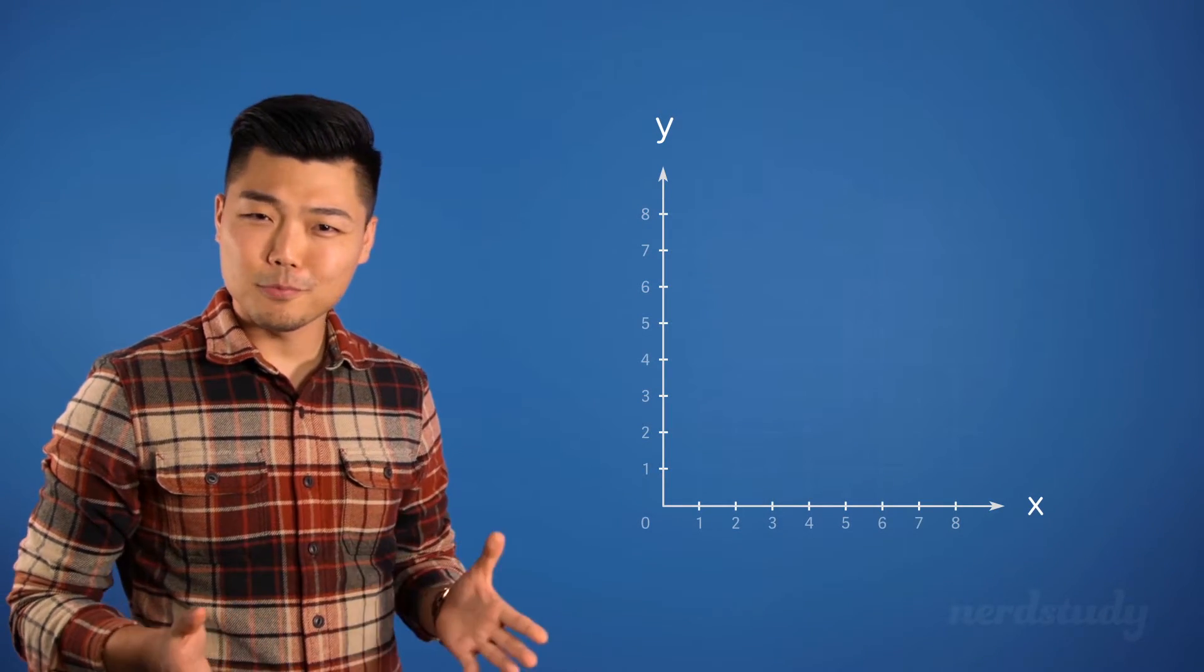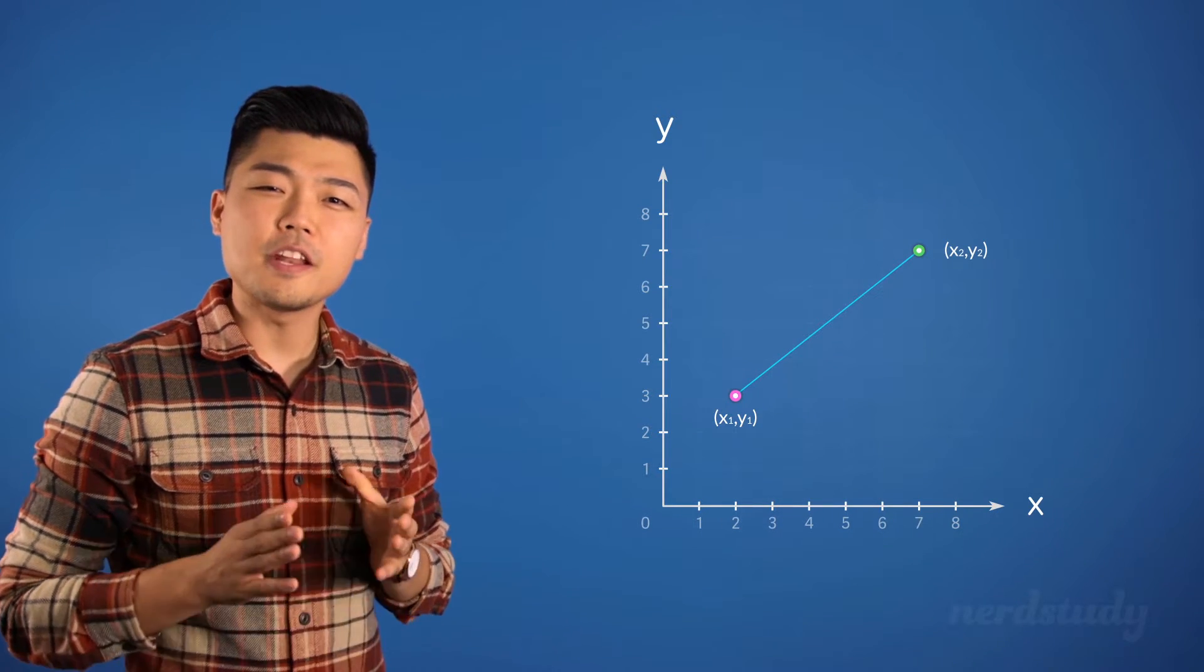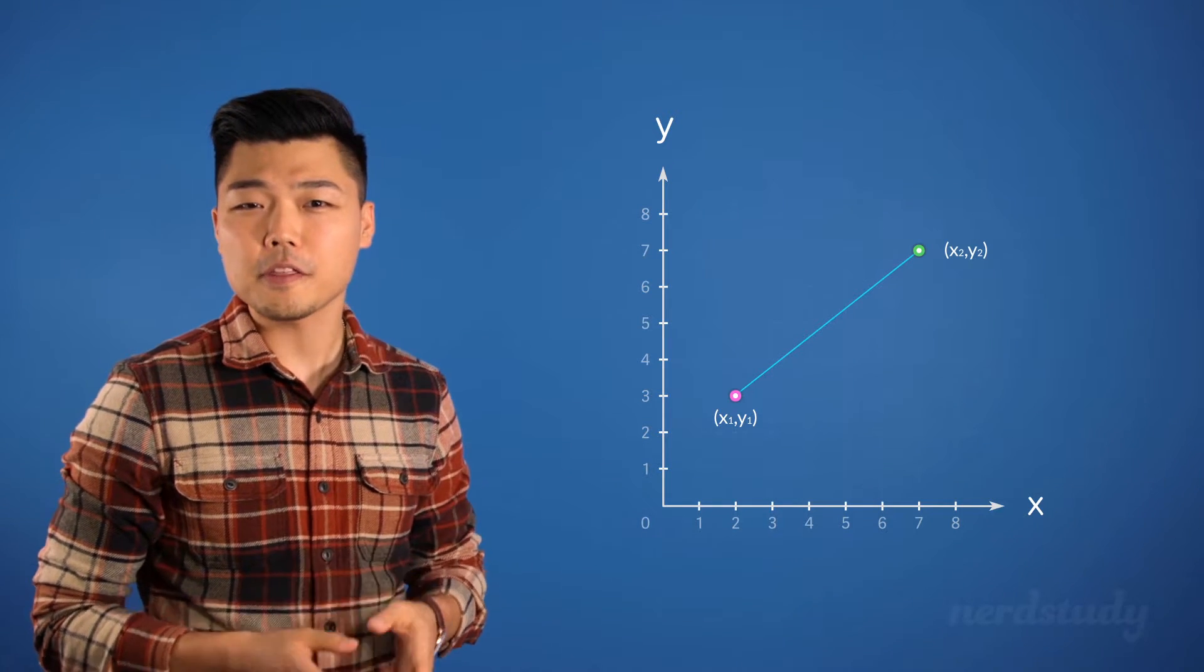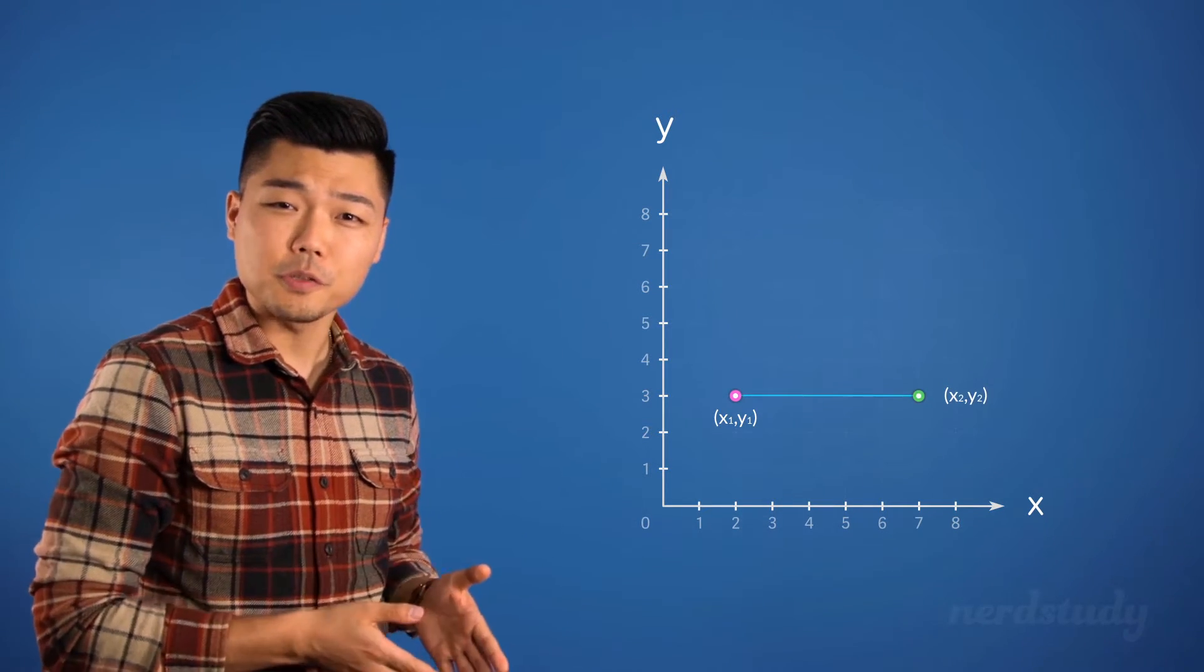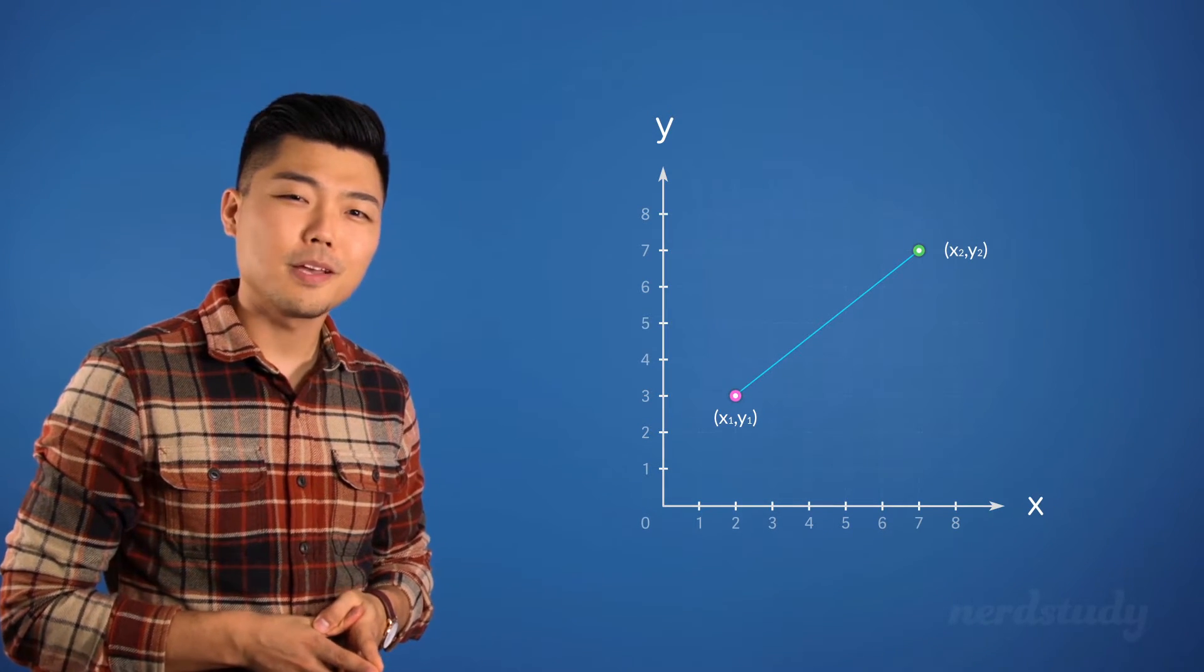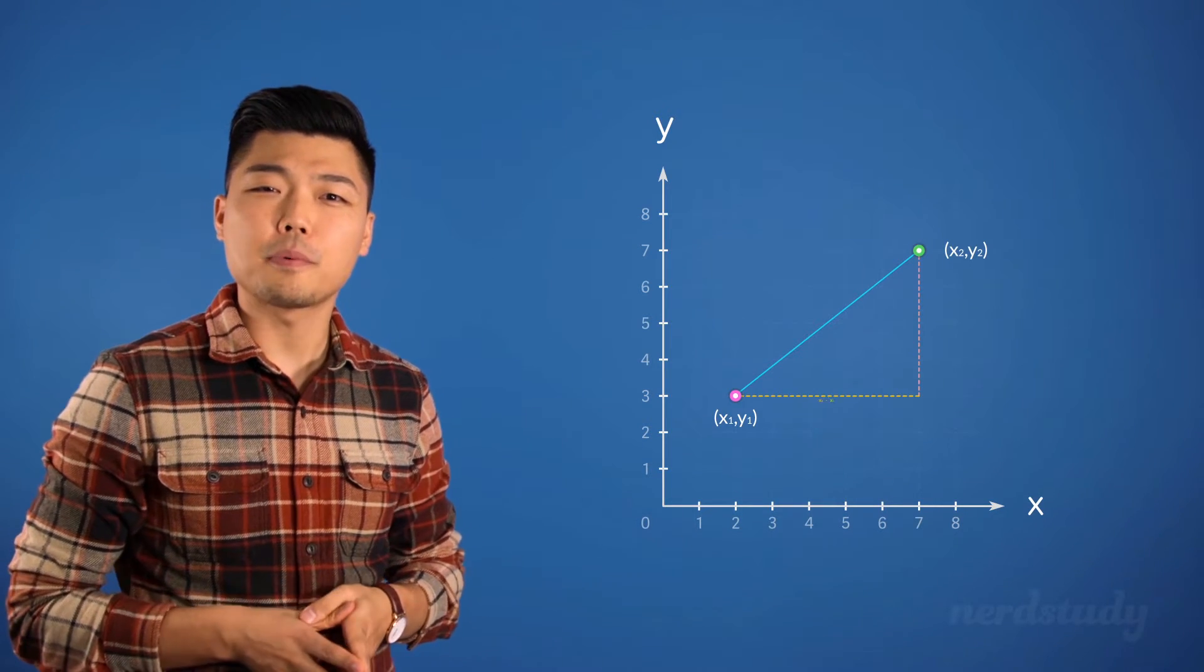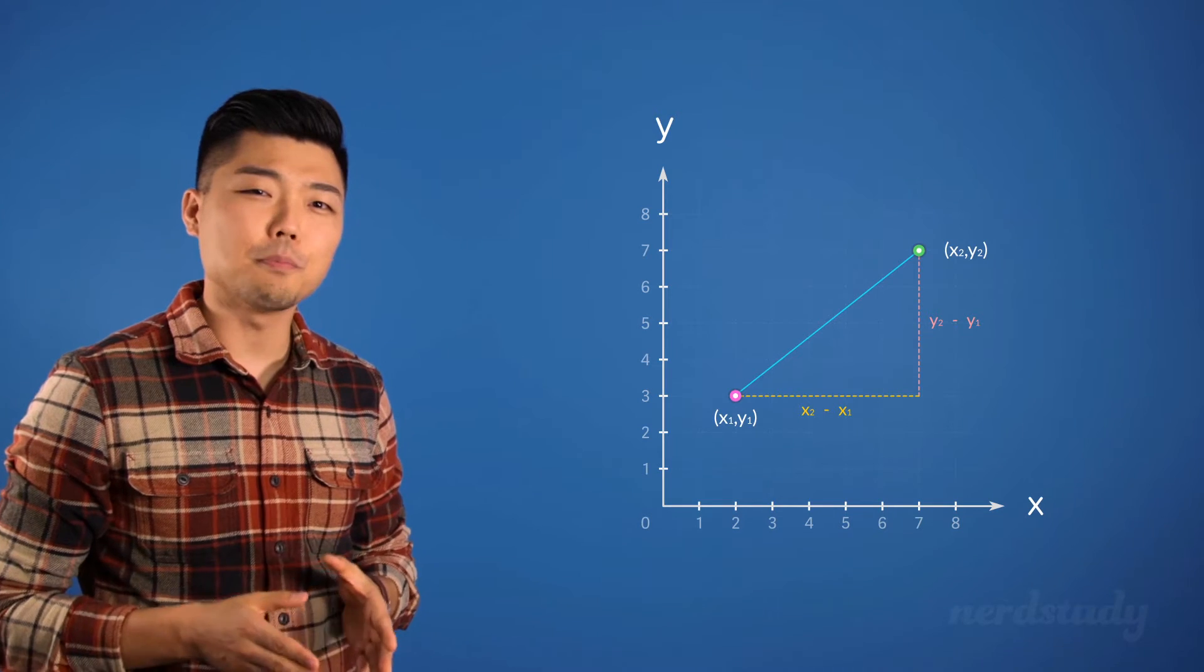Well, when you're given a line segment created by two coordinates, you have enough information to find out the length of that line, whether it is perfectly horizontal or slanted through the use of the Pythagorean theorem. The two legs can be found by doing x2 minus x1 and y2 minus y1.